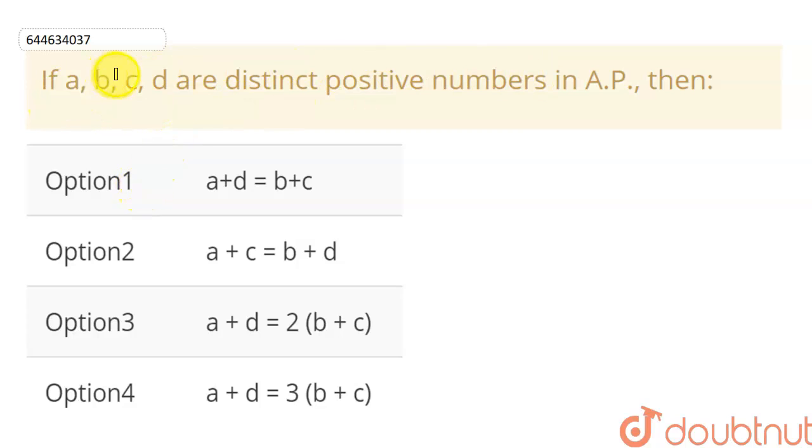So students, in this question we have to tell that these numbers a, b, c, d are given to us as distinct positive numbers, and they are in AP. We have to check this condition and tell which condition is true.